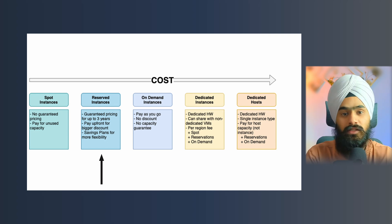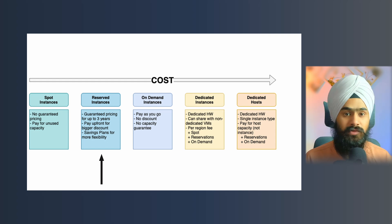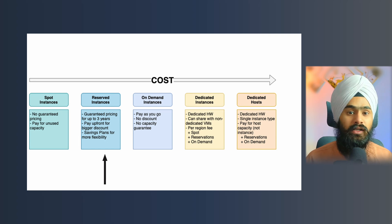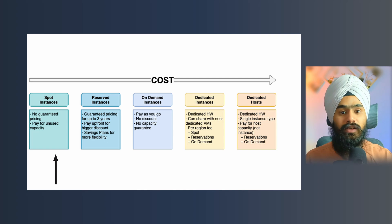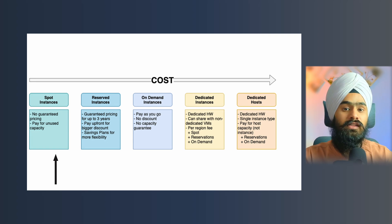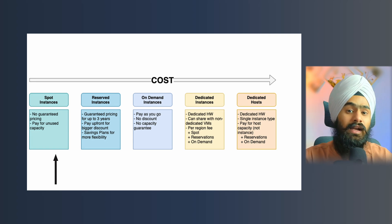Reserved instances save up to 75% of cost compared to on-demand. Another example: if you have an application doing batch processing temporarily and don't need a dedicated server, you can use a spot instance. Spot instances are temporary and not fully reliable — Amazon will reclaim them after about six hours with a two-minute alert so you can retrieve your data. However, they are great for small tasks or batch processing and offer up to 90% discount.